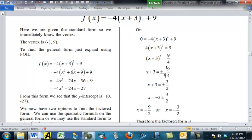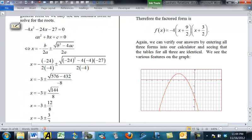Square root of 9 fourths reduces to 3 halves. And so, then we add negative 3 to both sides, and negative 3 plus 3 halves is negative 3 halves, and negative 3 minus 3 halves is negative 9 halves.